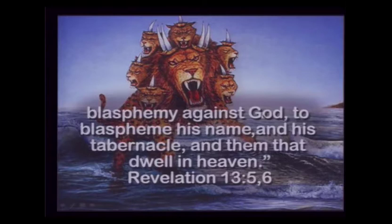He opened his mouth in blasphemy against God — to blaspheme his name, his tabernacle, and them that dwell in heaven. There are three things he blasphemes. Those who dwell in heaven are God and the angelic host: Father, Son, Spirit. The tabernacle was the earthly sanctuary — a model or mini-enactment of the plan of salvation, with the outer court, the holy place, and the most holy place — all depicting the plan of salvation.